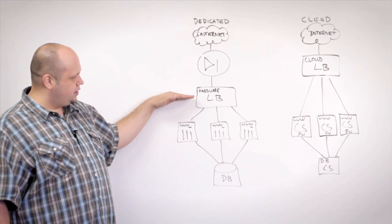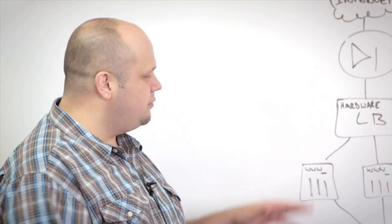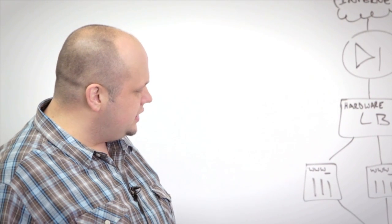And then after you go through your security screening, you come down to a hardware load balancer. This might be something like an F5 or Cisco ACE, or there's a number of different hardware load balancing solutions on the market today.